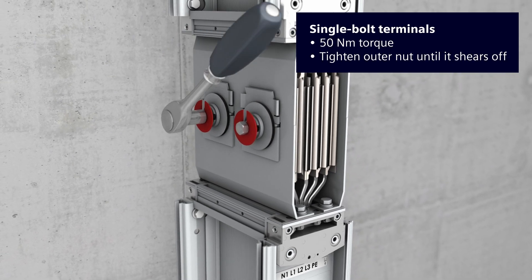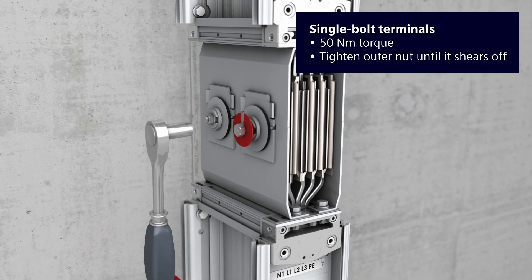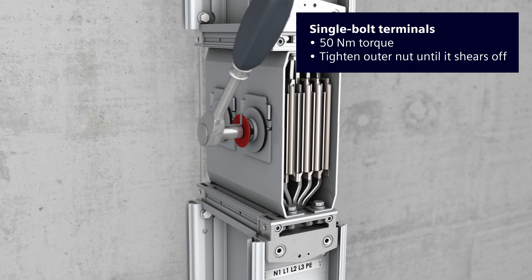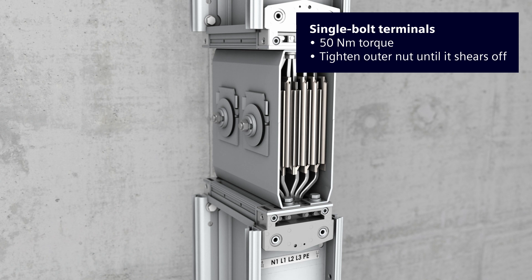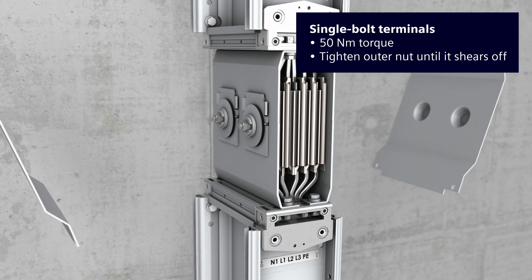During initial installation, the two single bolt terminals can also be tightened without a torque key. Tighten the outer part of the double-headed nut until shearing off. That will represent a torque of 50 Newton meters.